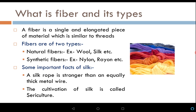Here is an interesting fact about silk: a silk rope is stronger than an equally thick metal wire. If both have the same diameter and the same length, the silk rope is actually stronger. We think metal is a very strong substance, and yes it is, but a silk rope is much stronger. The cultivation of silk is called sericulture — this is a very important short-answer question.